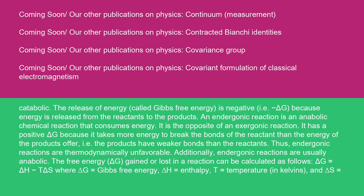The release of energy, called Gibbs free energy, is negative — i.e., minus delta G — because energy is released from the reactants to the products. An endergonic reaction is an anabolic chemical reaction that consumes energy. It is the opposite of an exergonic reaction. It has a positive delta G because it takes more energy to break the bonds of the reactant than the energy of the products offer — i.e., the products have weaker bonds than the reactants. Thus, endergonic reactions are thermodynamically unfavorable. Additionally, endergonic reactions are usually anabolic.